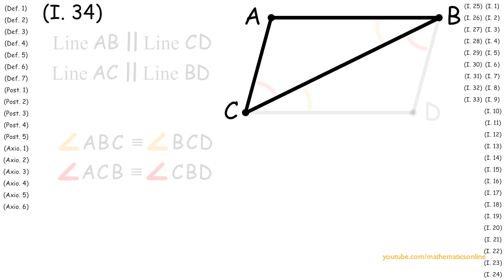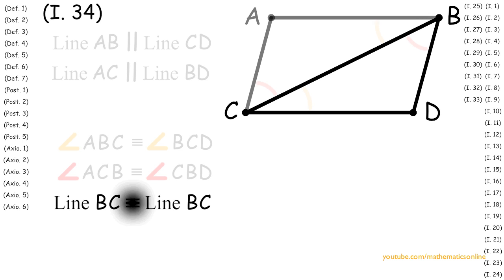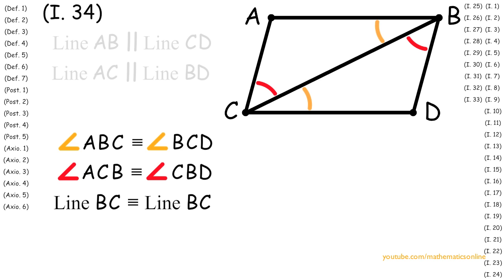Now looking at triangle ABC and triangle BCD, we can see that they share line BC in common. Since both triangles share a corresponding angle, side, and angle, then by Proposition 26, triangle ABC is congruent to triangle DCB.